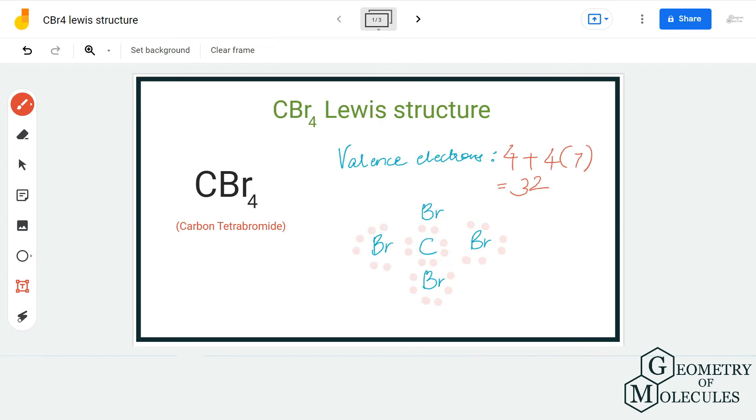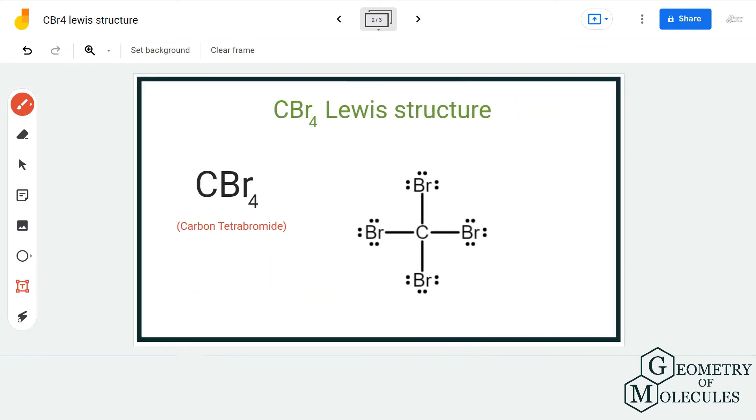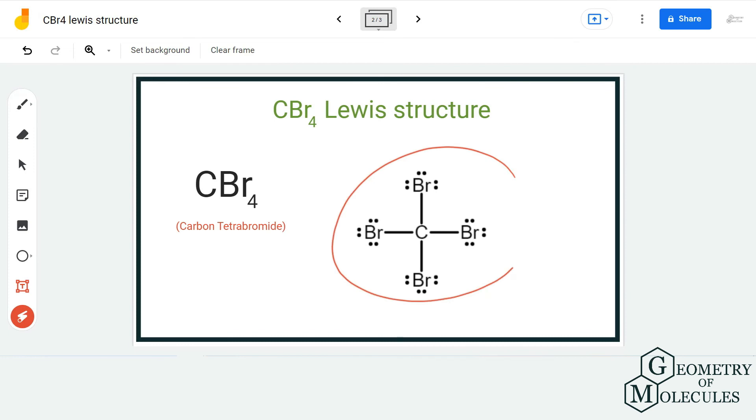Now this is the Lewis structure of CBR4, in which carbon forms a single bond with four bromine atoms and all the atoms in this molecule have a complete octet.